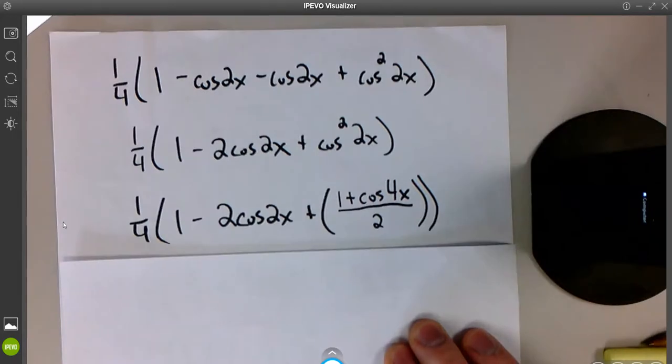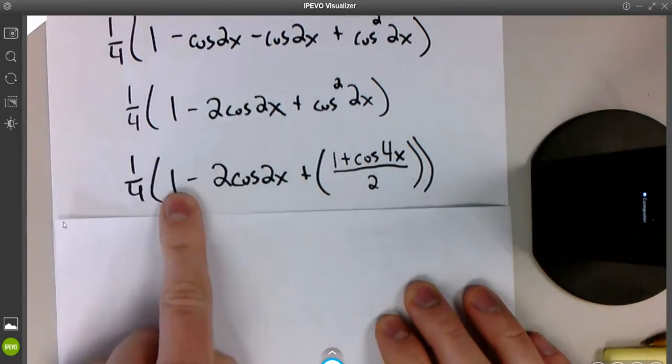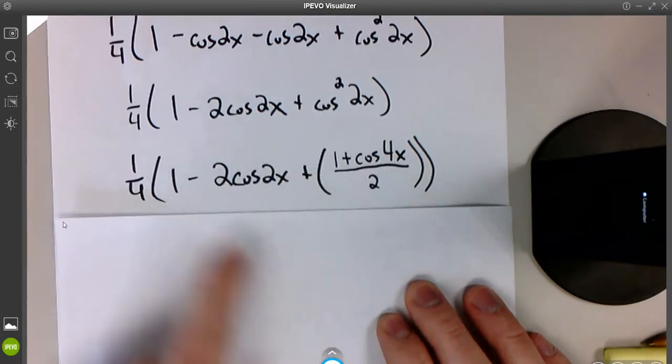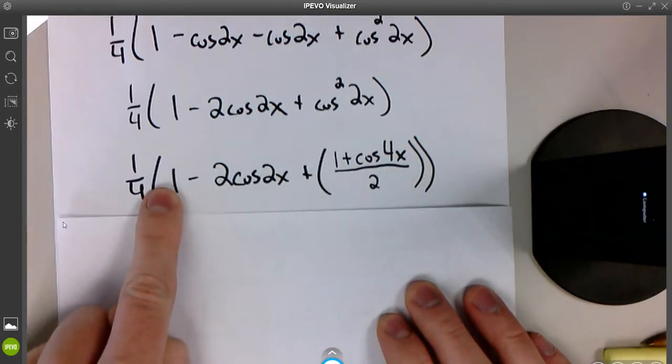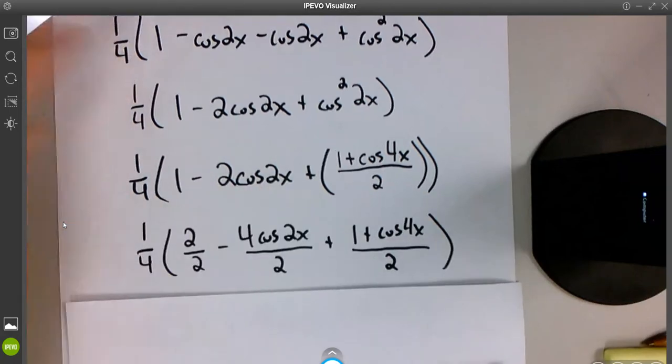I would like to say we're done, but we're not. We still have some cleaning up to do. We're adding fractions here, because this is over 1, this is over 1, this one's over 2. So we're going to need to get a common denominator. I'm going to multiply this by 2 over 2, and I'm going to multiply this by 2 over 2. So I get them all over 2.